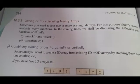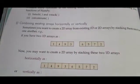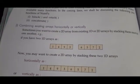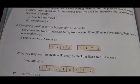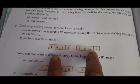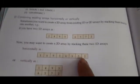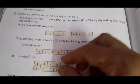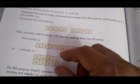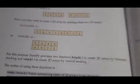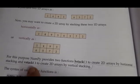The first topic is combining existing arrays horizontally or vertically. We use hstack and vstack functions. Horizontally merging means both arrays get merged horizontally and become one array. Vertically means they will get merged vertically — the two arrays will get vertically merged. For that we use hstack and vstack functions.